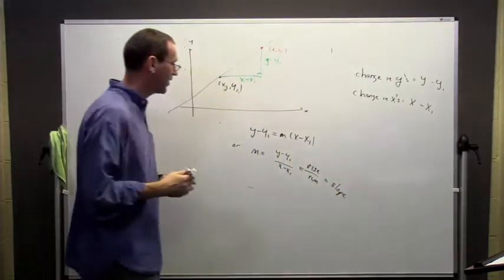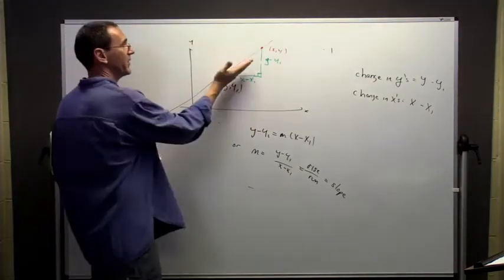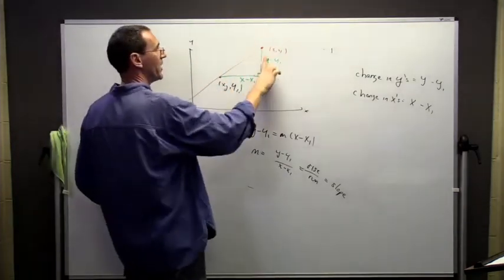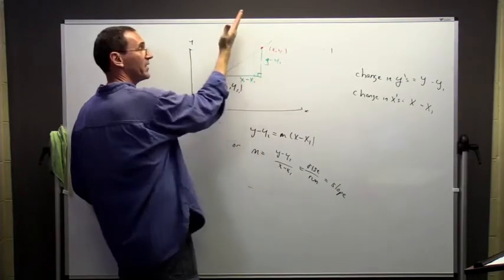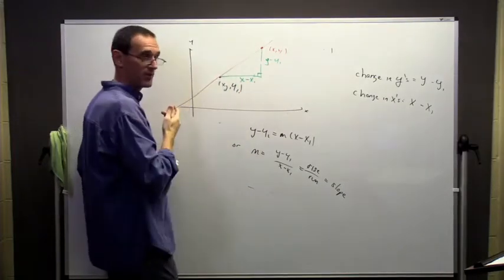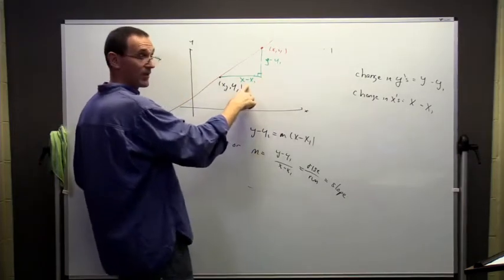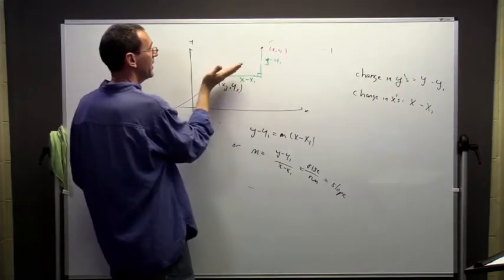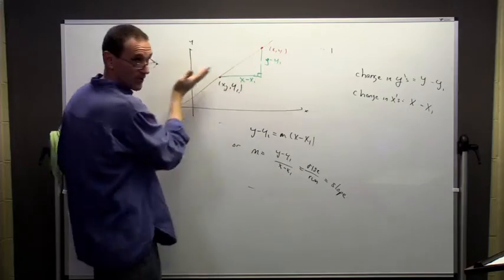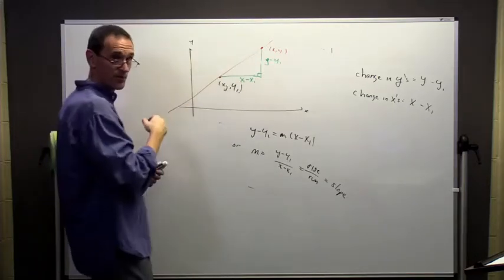So the slope tells us basically how steep this is. If I get a large change in y for a small change in x, I'm going to have a large positive slope. If I have a very small change in y for a large change in x, I'm going to have a very shallow slope. It's going to be positive but close to zero.